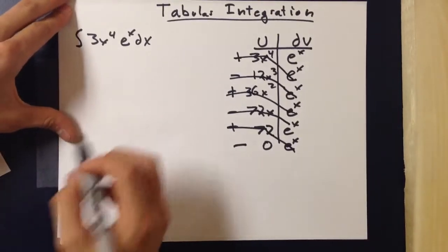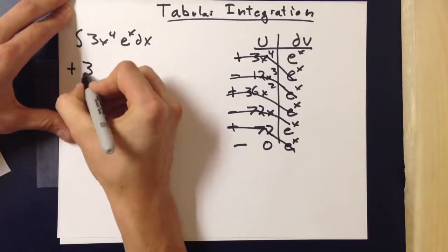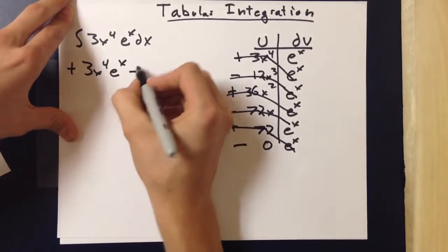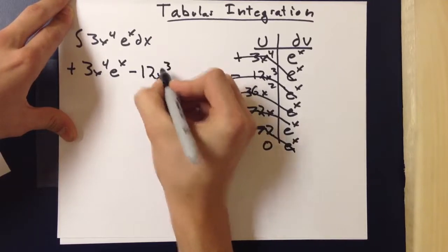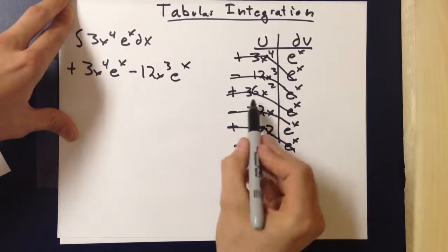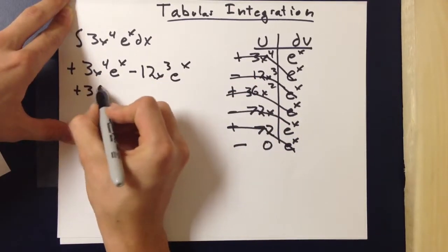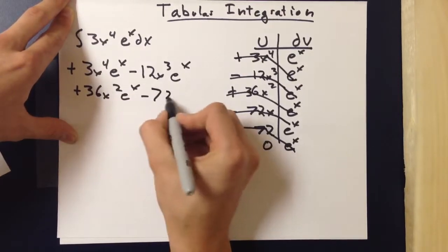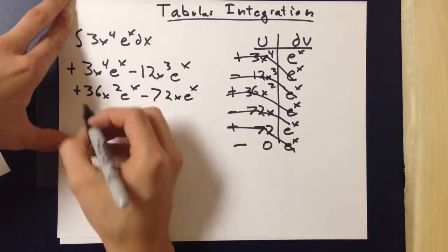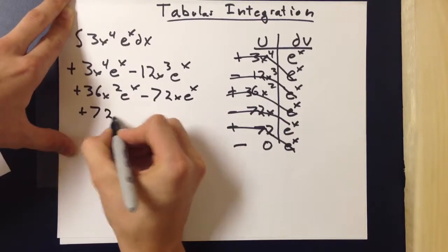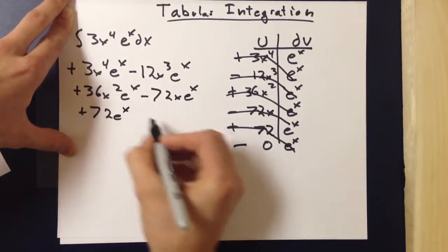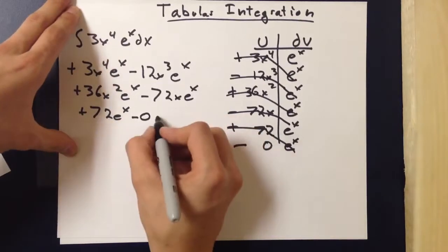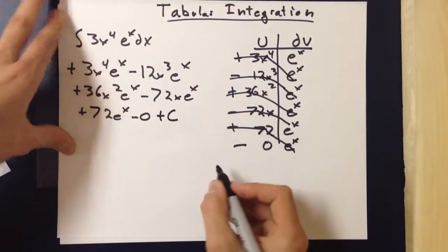So you finally get positive 3x to the fourth times e to the x, minus 12x cubed e to the x, plus 36x squared e to the x, minus 72x e to the x, plus 72 e to the x, minus 0 — but 0 is 0. And then you add C, like always.